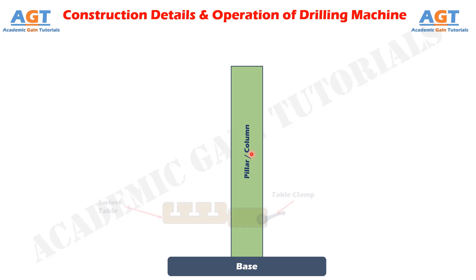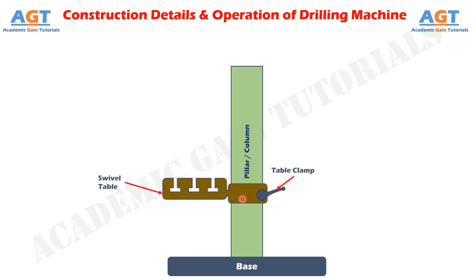Mounted on this pillar or column there is a swivel table, also called a sliding table. The table is attached to the column and it can be rotated around the column at any position, and can have upward and downward sliding movement along the column. There are T-slots cut on the swivel table, and the workpiece can be mounted on the table using these slots. The swivel table can be adjusted at any position as per requirement.